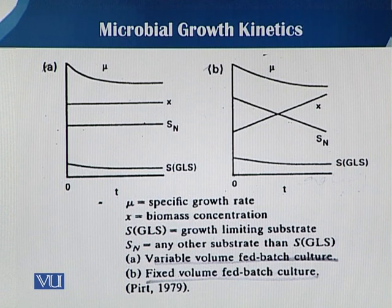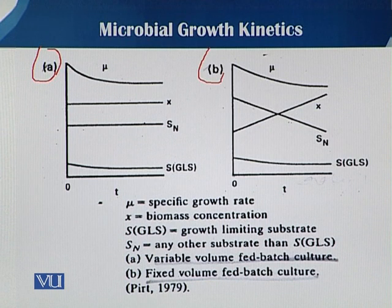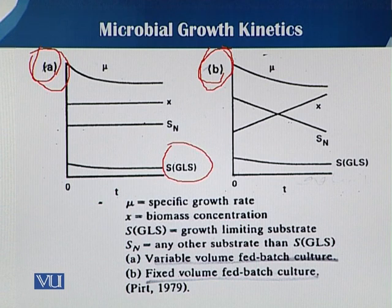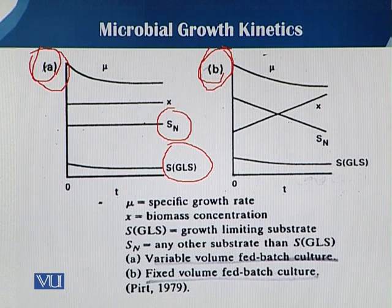In this slide you can see two different diagrams. Diagram A deals with variable volume and diagram B deals with fixed volume. S_GL represents growth-limiting substrate — those substrates which directly affect growth or the fermentation process. S_N represents non-limiting substrate, and X is the biomass.